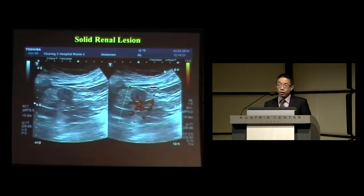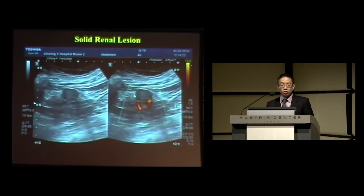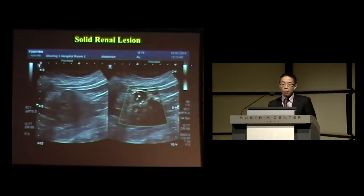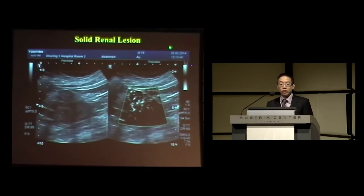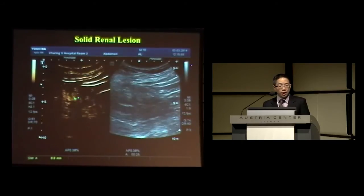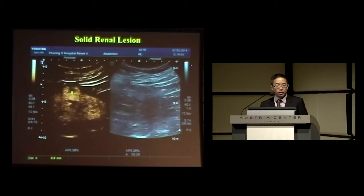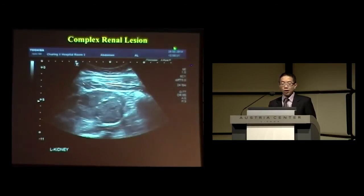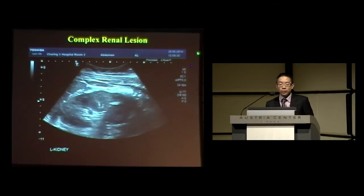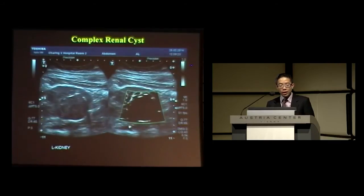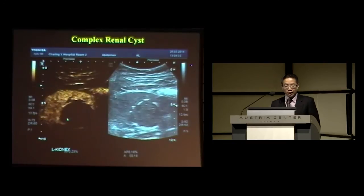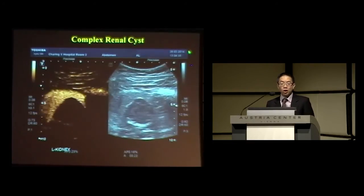For a solid renal lesion where you want to know whether it is vascular — here is a renal lesion with no vascularity seen on Power Doppler, but when you turn on SMI you get marked vascularity within the lesion. Contrast confirmed a hypervascular enhancing lesion with an area of necrosis — renal cell carcinoma. In contrast, another apparent solid renal lesion with a slight calcified rim shows no flow on SMI at all. Contrast confirmed an enhancing kidney but absolutely no flow within the lesion itself — an avascular, non-malignant lesion.